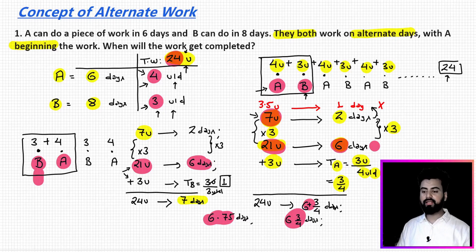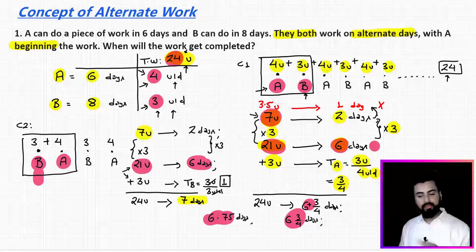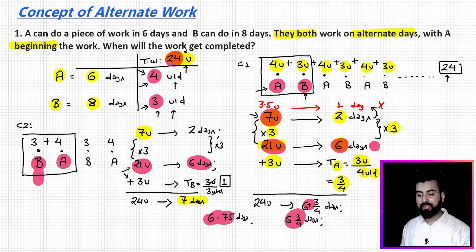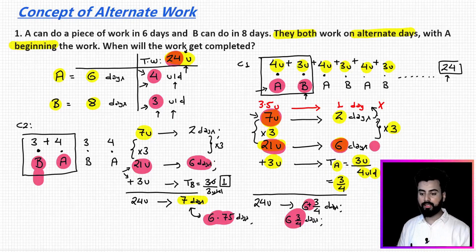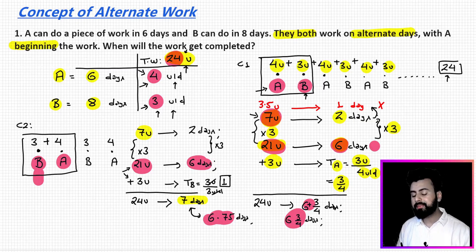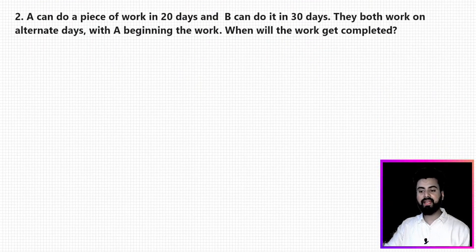Comparing the two cases: Case 1, where A started the work, gives an answer of 6.75 days. Case 2, where B started the work, gives 7 days. Everything else was the same, yet we get two different answers. So we can conclude that the answer of problems based on alternate work may be dependent on who has started the work. Let me show one more problem and then conclude why I say 'may be.'